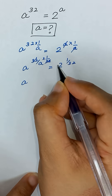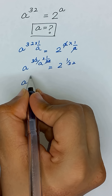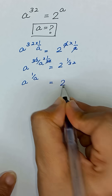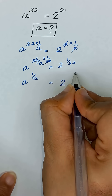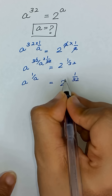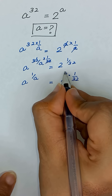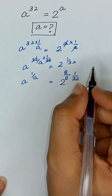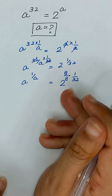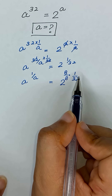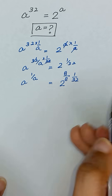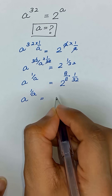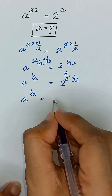Now we will multiply both sides by the power 1 divided by 32. This cancels the 32, giving us a to the power 1 divided by a is equal to 2 to the power 1 divided by 32. We can rewrite 1 divided by 32 as 8 divided by 8 times 32, since the 8s cancel out and it still equals 1 divided by 32.